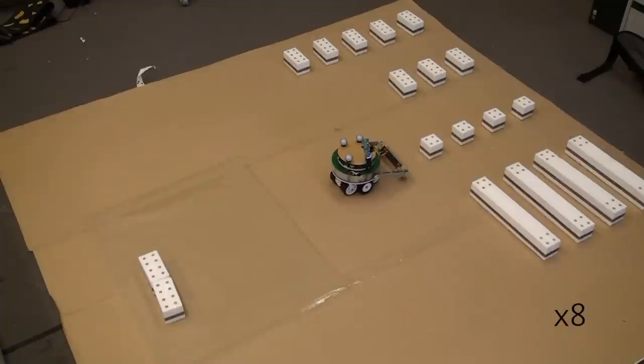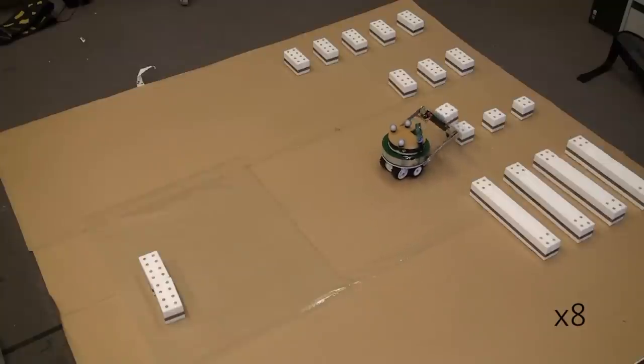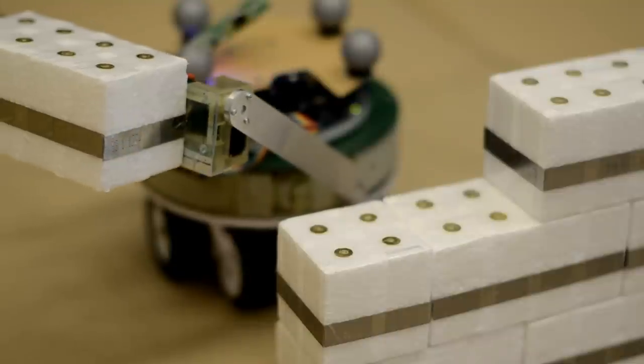The robot fetches the small block by centering itself using its array of sensors, which is wider than the block. It then grasps the block with a switchable magnet.